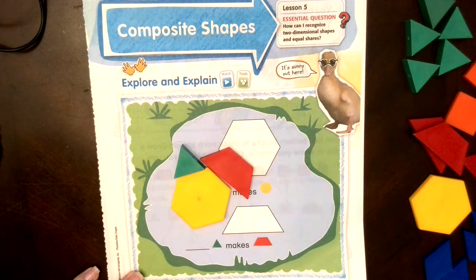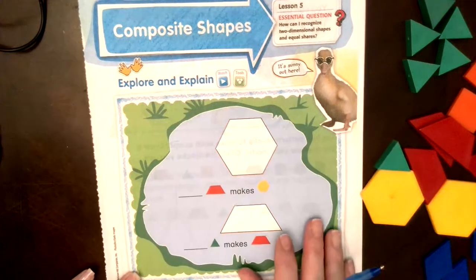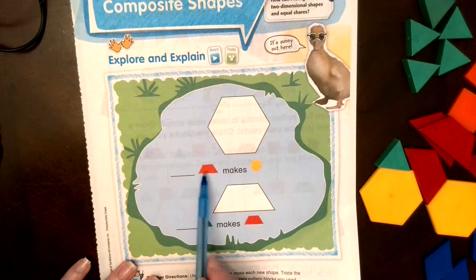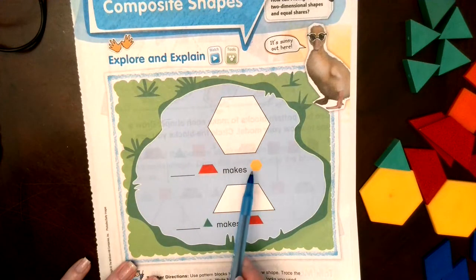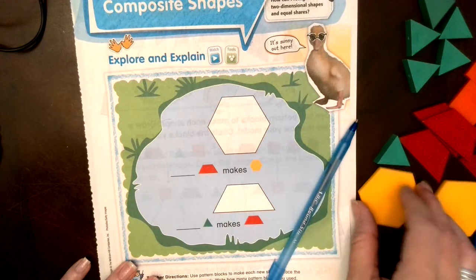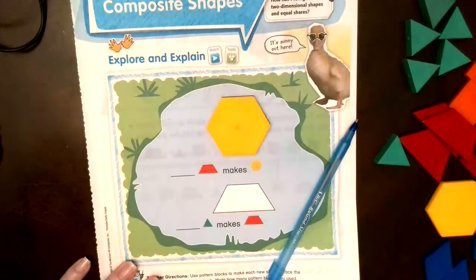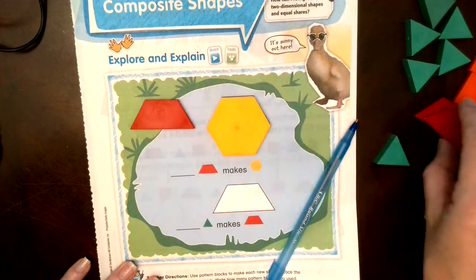So today it says how many trapezoids makes a hexagon. So I want to make this shape, but I have to figure out how many of these I need to do it.